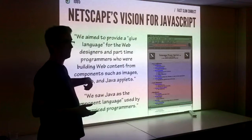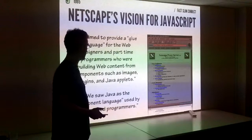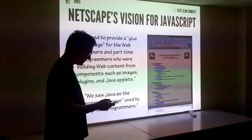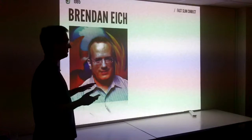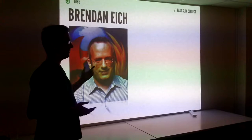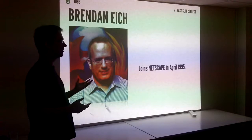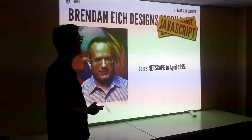They saw Java as the component language used by higher-priced programmers — people in white coats writing proper languages. Java was very hot at that point. So they hired Brendan Eich, who had worked at Silicon Graphics writing operating system and network code. They hired him in April of 1995 to write this glue language in Netscape. It was called Mocha, then LiveScript, then JavaScript — named after Java because Java was the hot thing. It actually has nothing to do with Java really.